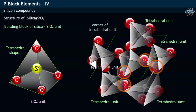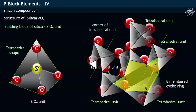Each corner of the SiO4 unit with tetrahedral shape is in turn attached to adjacent tetrahedral units as shown. Due to this joining of tetrahedral units, it may be noticed that an eight-membered cyclic ring structure as shown is formed.